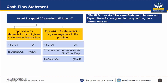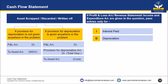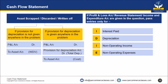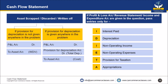Sometimes in the problem they will give you a profit and loss account, or revenue statement, or income and expenditure account. When these are given in the question, you will pass entries only for the following adjustments: interest paid, depreciation, non-operating income, non-operating expenses, provision for taxation, and appropriation. You will never pass the entry for sales, cost of goods sold, administrative expenses, or selling expenses. Pass entries only for these six items.